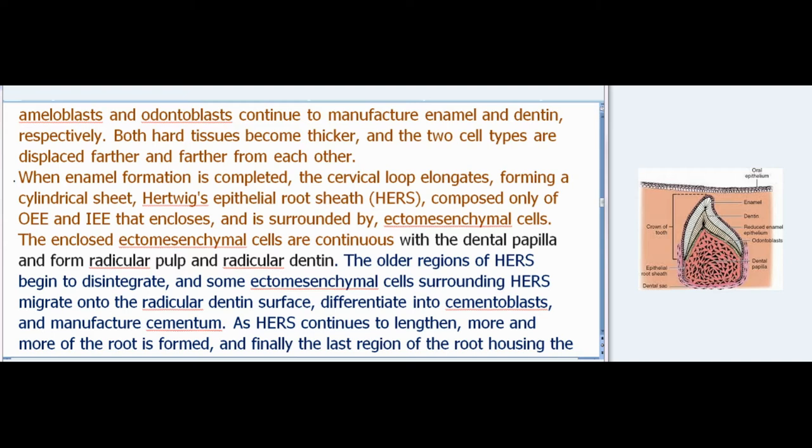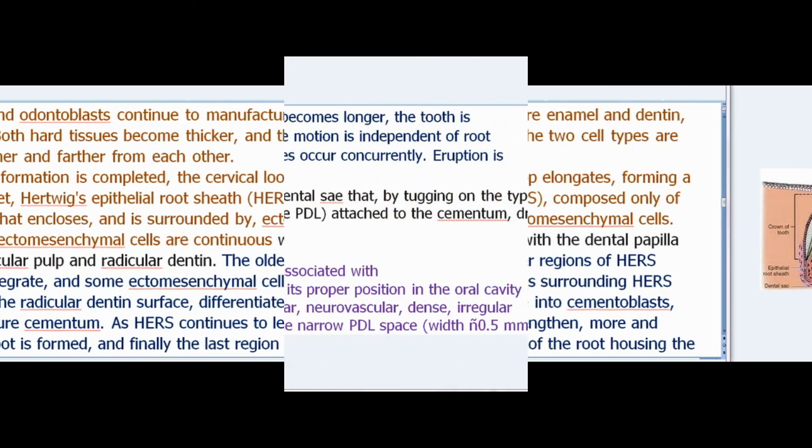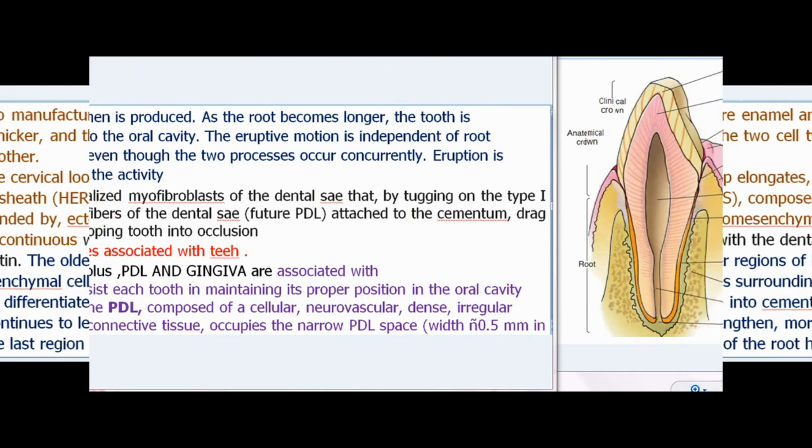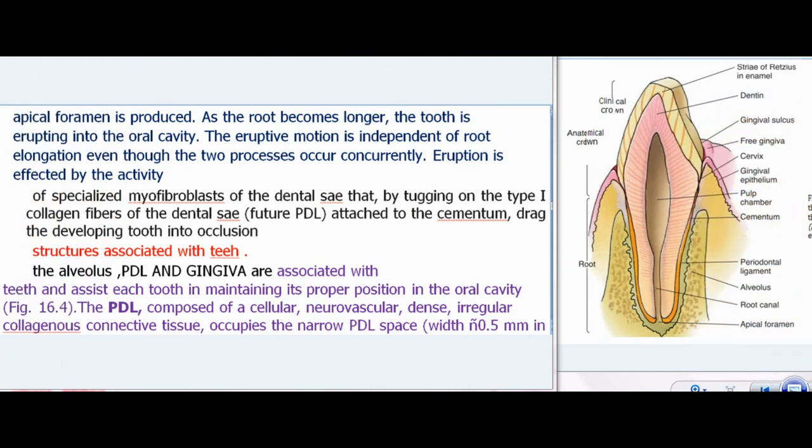As HERS continues to lengthen, more and more of the root is formed, and finally the last region of the root housing the apical foramen is produced. As the root becomes longer, the tooth is erupting into the oral cavity. The eruptive motion is independent of root elongation, even though the two processes occur concurrently.